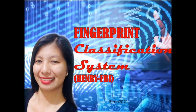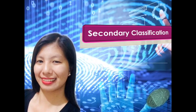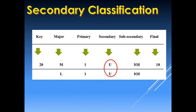Hello guys. For today's video I will be discussing the fingerprint classification system, specifically the Henry classification that was modified by the Federal Bureau of Investigation. We are now on the third part of our video series on the Henry classification system, and we are going to discuss the secondary classification, which is placed on the right side of the primary classification and is our second step on the Henry FBI classification system.